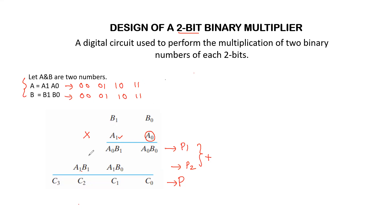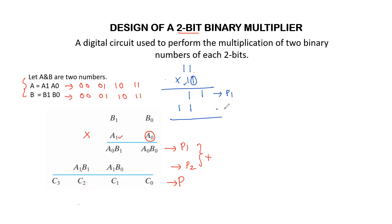To understand this multiplication, let us take a binary multiplication example with two bits: 11 multiplied by 11. First we multiply 11 by 1, giving the first partial product 11. Then we multiply 11 by the next 1, giving the second partial product 11. Now we add these two partial products to get the final product.